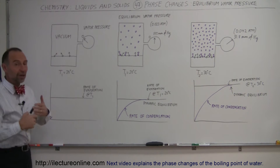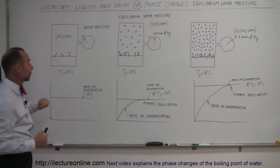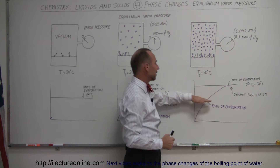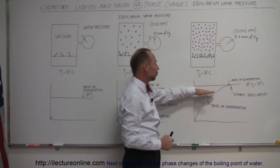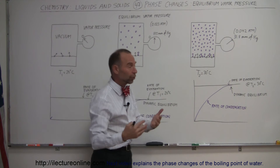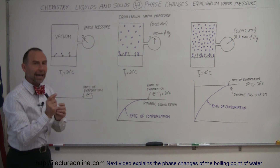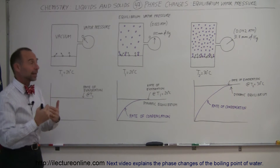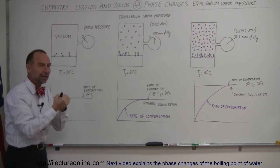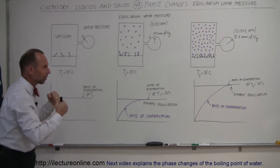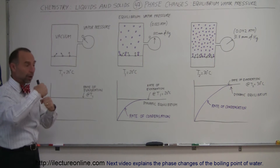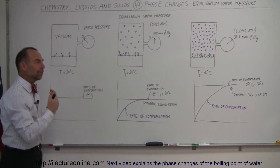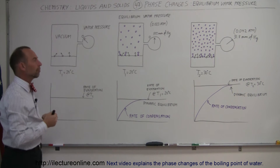The higher the temperature, the higher the kinetic energy, the higher the evaporation rate. For example, when the temperature goes up to 30 degrees centigrade, the evaporation rate will have increased, because the molecules have a greater kinetic energy and a greater number of them will have enough kinetic energy to jump free from the cohesive forces of the water molecules. Because of hydrogen bonding, the water molecules tend to stick together, but given enough energy, a few of them can jump free.